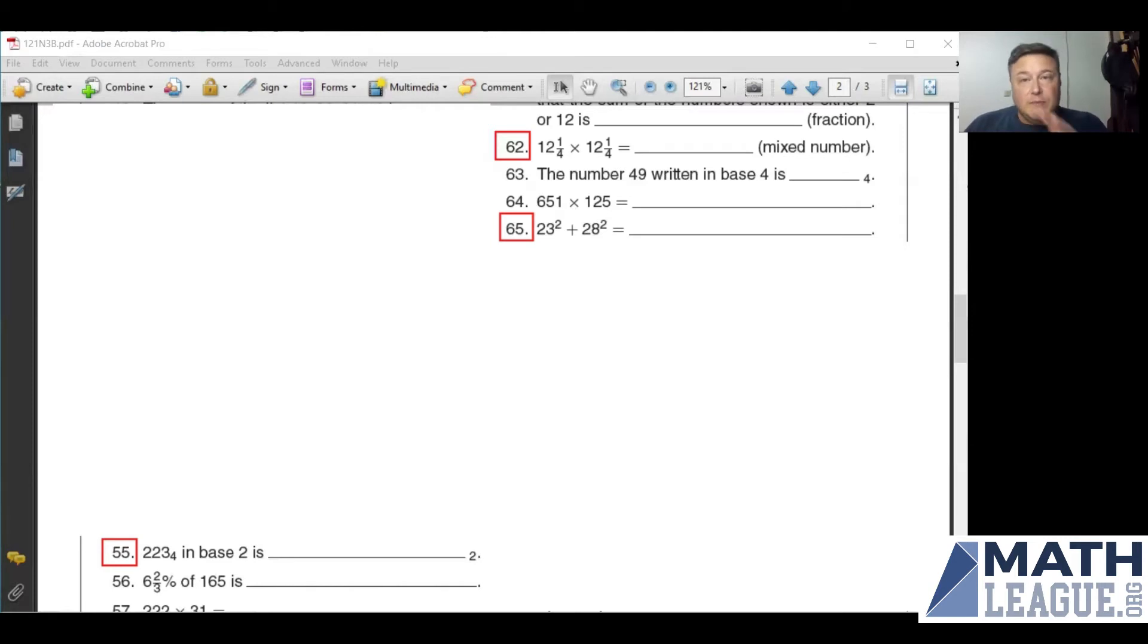Conversely, if you're trying to go from base two into base eight, you'll group the digits three at a time starting from the unit's digit and turn those into base eight numbers. If you're turning from base two into base four, you're going to group the numbers two at a time starting from the unit's digit and turn those into base four numbers.